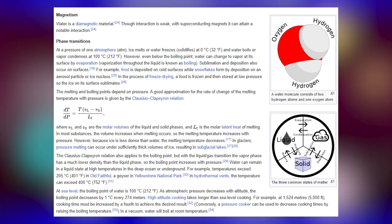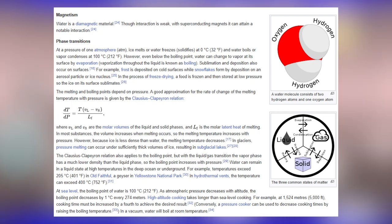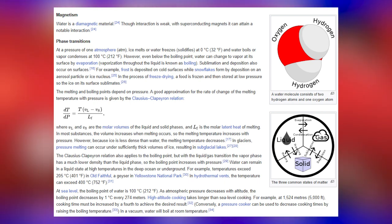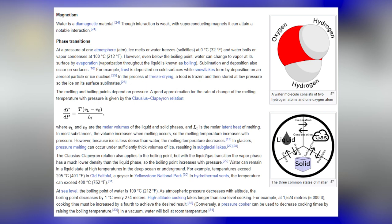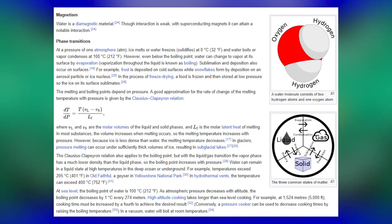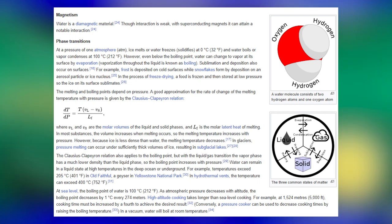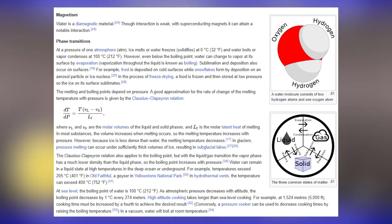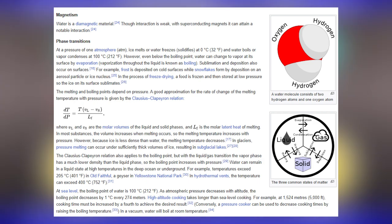At a pressure of 1 atmosphere, ice melts or water freezes at 0°C (32°F), and water boils or vapor condenses at 100°C (212°F). However, even below the boiling point, water can change to vapor at its surface by evaporation. Sublimation and deposition also occur on surfaces — frost is deposited on cold surfaces, while snowflakes form by deposition on an aerosol particle or ice nucleus. In freeze-drying, a food is frozen and then stored at low pressure so the ice on its surface sublimates.